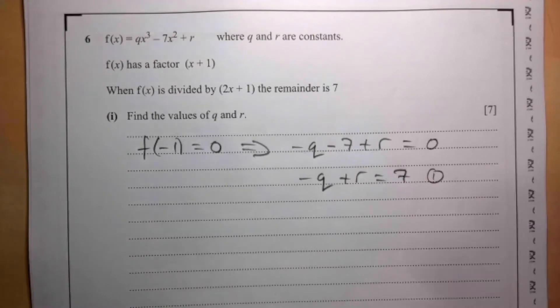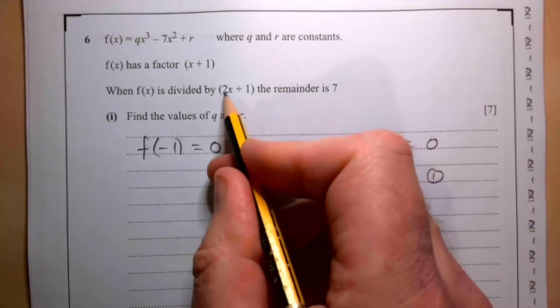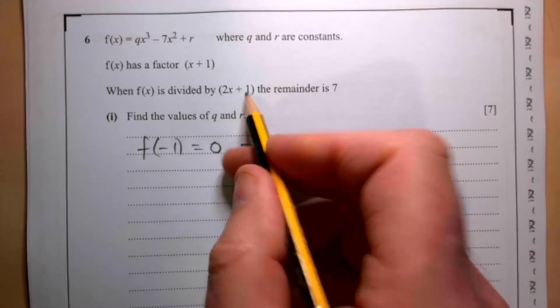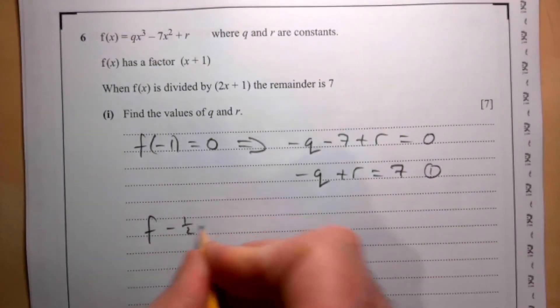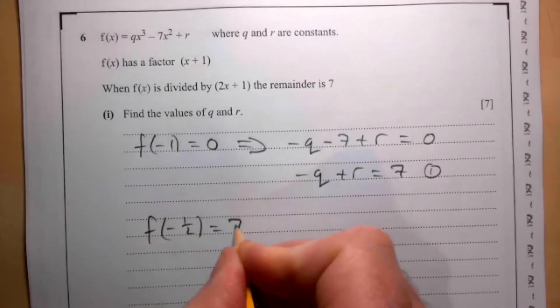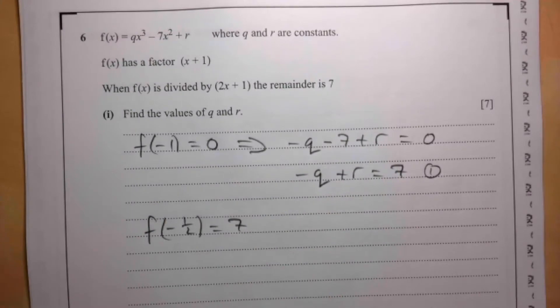This one then is going to be f(-1/2). So f(-1/2) equals 7.